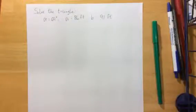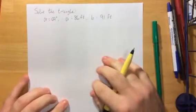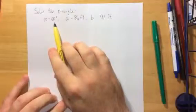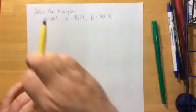Welcome back everyone. In this video we're going to be investigating the ambiguous case of the side-side-angle triangle when solving triangles. The information provided in this problem is that the angle alpha is equal to 69 degrees, a is equal to 86 feet, and b is equal to 91 feet.